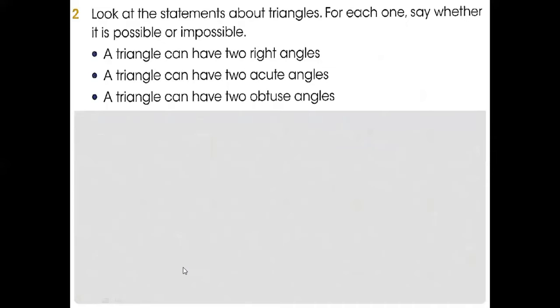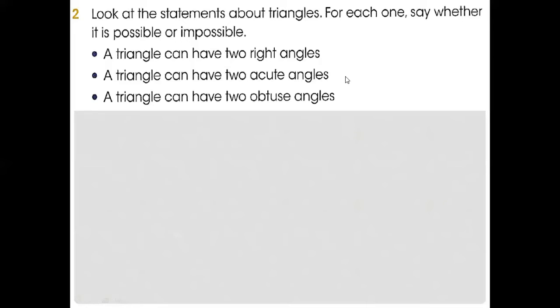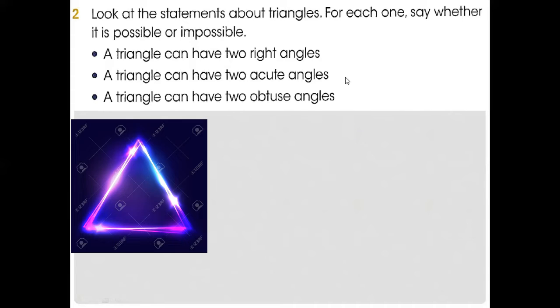Can a triangle have two right angles? Can you see any triangle that has two right angles? No, so this one is false, impossible. A triangle can have two acute angles. Acute angles are less than 90, so yes, it's possible.